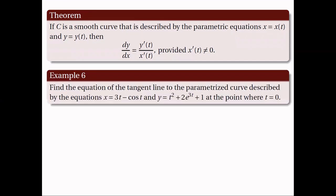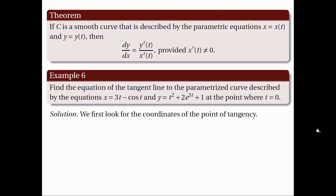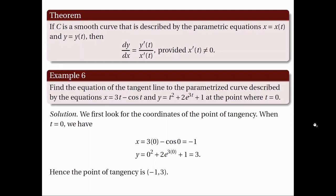Let's have an example. We want to find the equation of the tangent line to the parametrized curve described by x equals 3t minus cosine t, and y equals t squared plus 2 exponential of 3t plus 1, at the point where t equals 0. To answer this, we need two things: first, the point of tangency, and second, the slope of the tangent line at the given point. To find the coordinates of the point of tangency, we evaluate x and y at t equals 0. When t is 0, x equals negative 1 and y equals positive 3, so the point of tangency is (−1, 3).